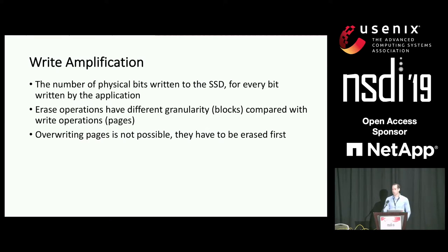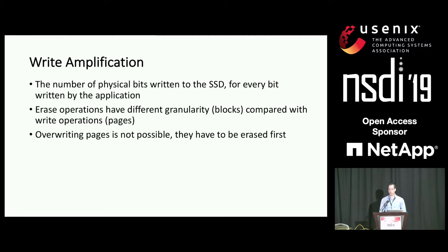Write amplification is the ratio between the number of bytes written by the application — the cache in our case — and the number of bytes actually written by the device. For example, if the cache writes one byte but the device has to write 10 bytes, the write amplification is 10.